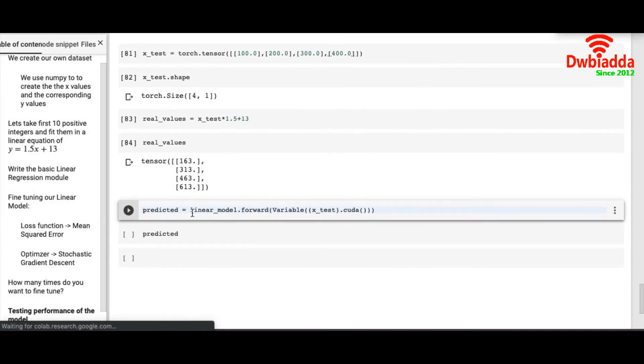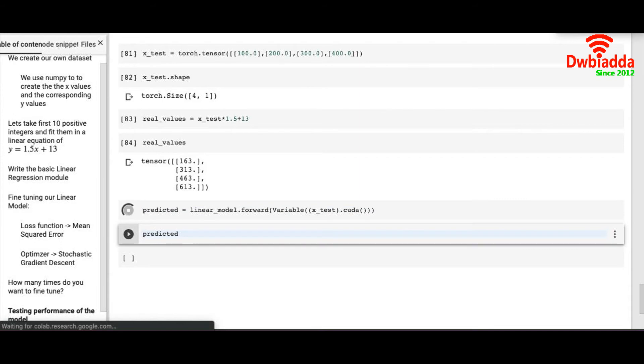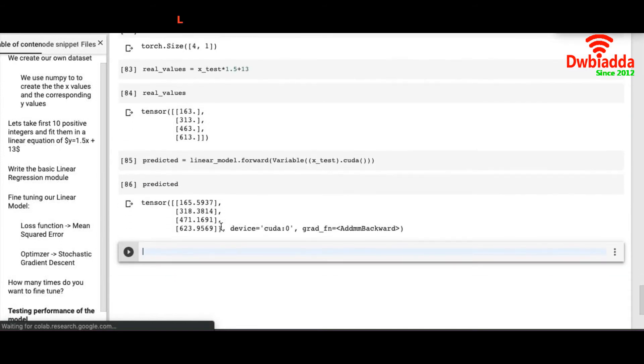Now let's see how our model predicts the values. The model predicts as 165.59, 318.38, 471.16, and 623.95, which are pretty close to the actual values.